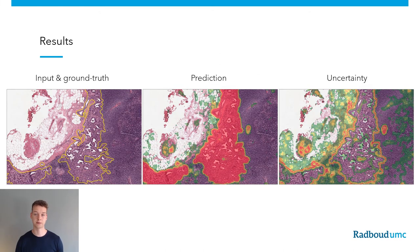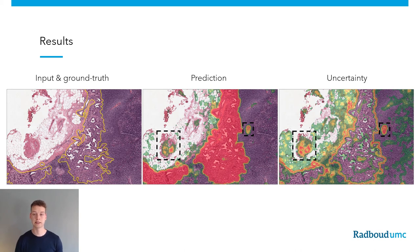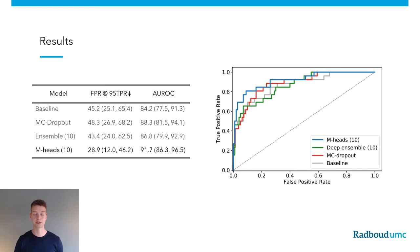When looking at the results of our multi-head model, we really see the value of having the uncertainty estimates associated with the prediction that the model makes. The model is capable of making a tumor segmentation mask for breast cancer metastasis, which you can see in the middle panel. In the panel on the right, you see the uncertainty heat map associated with this prediction. Here we see regions where the model incorrectly classifies the tumor class for healthy tissue, but we see that the uncertainty heat map correctly flags these regions, which demonstrates the importance of having these uncertainty estimates.